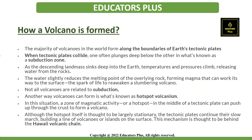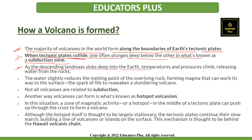Now let's see how a volcano is formed — what is the process behind the formation of a volcano? The majority of volcanoes in the world are formed along the boundaries of the Earth's tectonic plates, which are massive expanses of our planet's lithosphere that continually shift, bumping into one another. When these tectonic plates collide, one often plunges deep below the other in what we know as a subduction zone. As the descending land mass sinks deep into the Earth, the temperature increases and it releases water from the rocks. This water slightly reduces the melting point of the overlying rock, and it forms magma that can work its way to the surface.